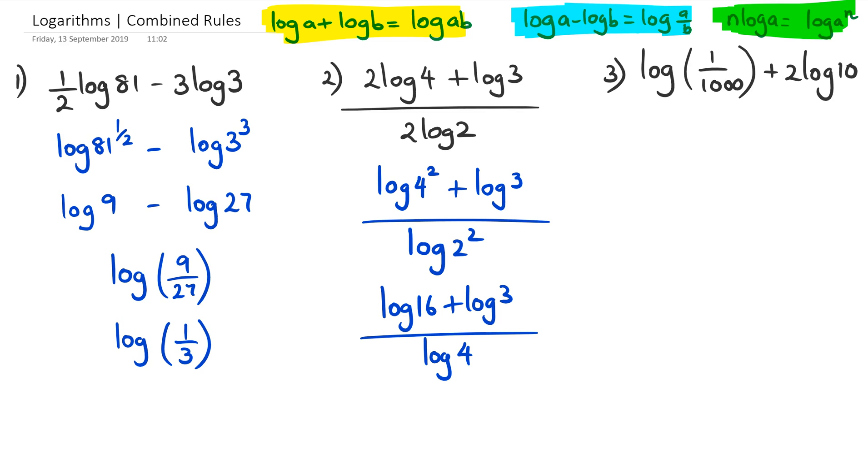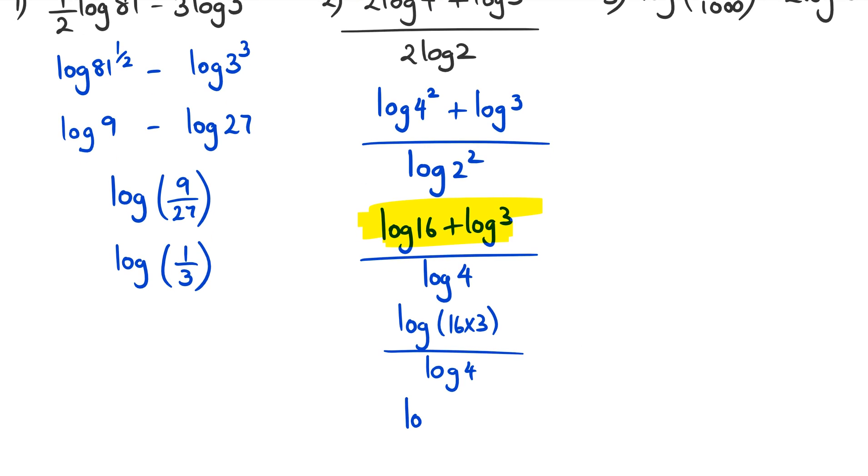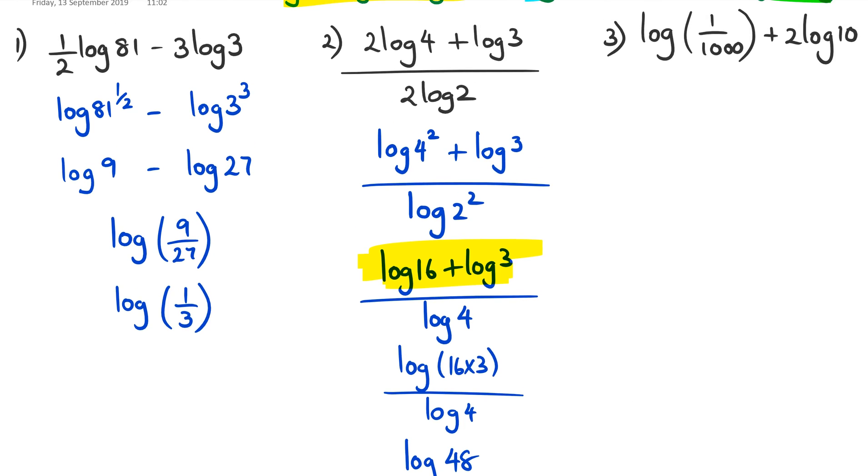When we have log16 and log3, I'm going to use the yellow version of this formula. We've got a plus b, which means we're going to do a times b. So we get log(16×3), and that whole thing is divided by log4. Carrying on, I get log48/log4. Unfortunately, we can't go any further than that, so that's where the answer stays.